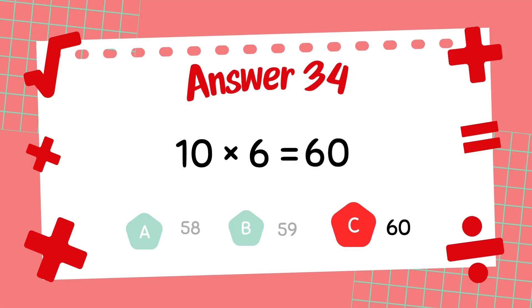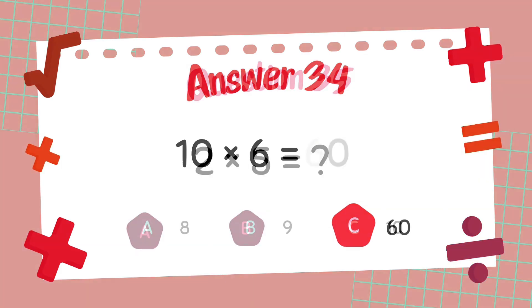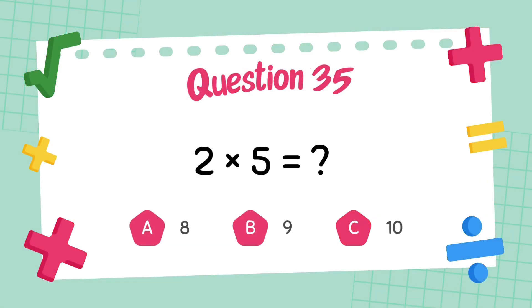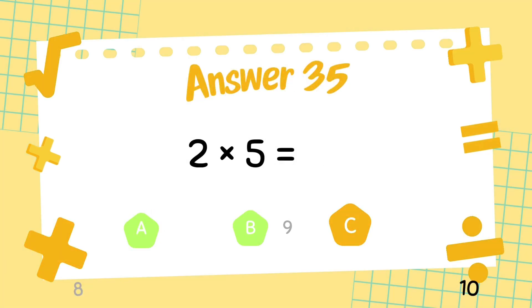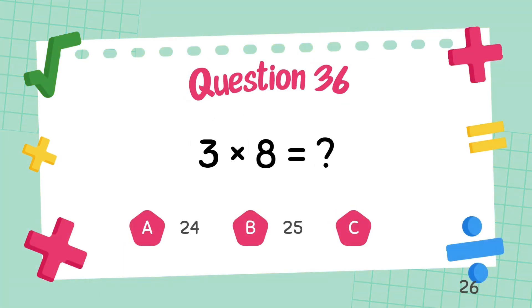What is 2 multiply 5? The answer is 10. What is 3 multiply 8? The answer is 24.